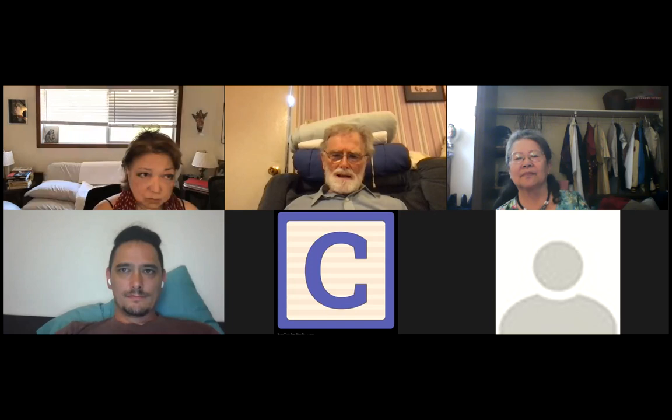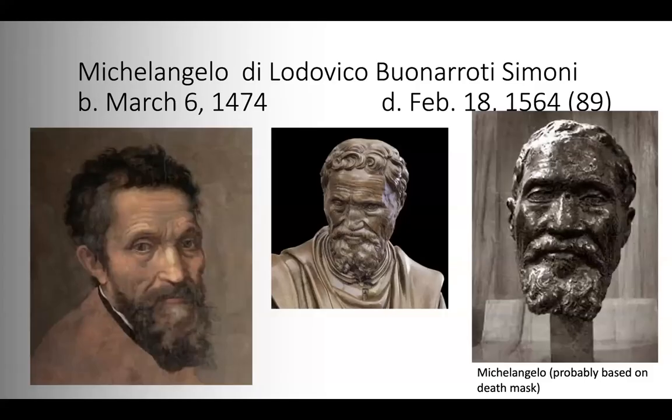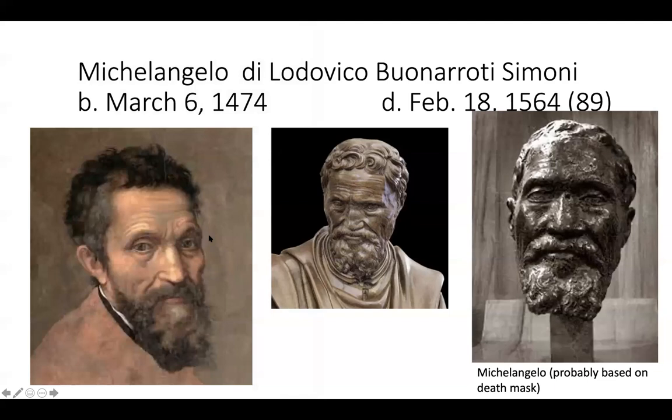I'm just going to welcome you all and note that I am a distant relative to Michelangelo di Lodovico Buonarroti Simoni — just kidding. Michelangelo was born in 1476. He was a sculptor, painter, architect, and poet, born about 40 miles from Florence, and his father's business was in banking.